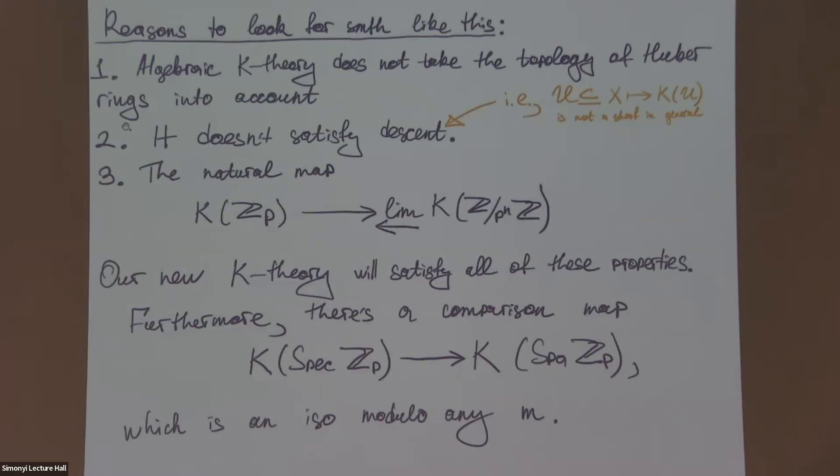For me, p-adic geometry is just a p-adic analog of complex analytic geometry. And so this is a field which is of course very important. We have the algebraic variety where you can define algebraic K-theory in that context. What about its topological counterpart? This question is very interesting already for ℤ_p or ℚ_p. What is this other K-theory for such simple objects? Maybe reasons why you want to look for something like this. First of all, this algebraic K-theory, which you can define in this context, just does not take the topology of Huber rings into account.